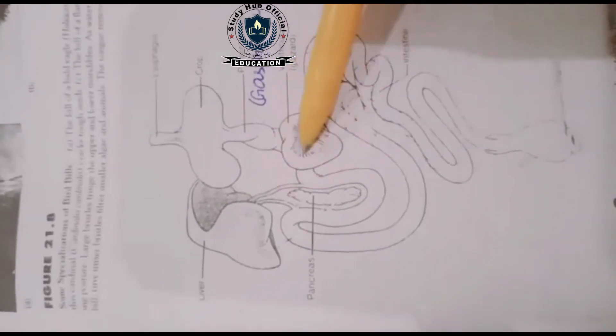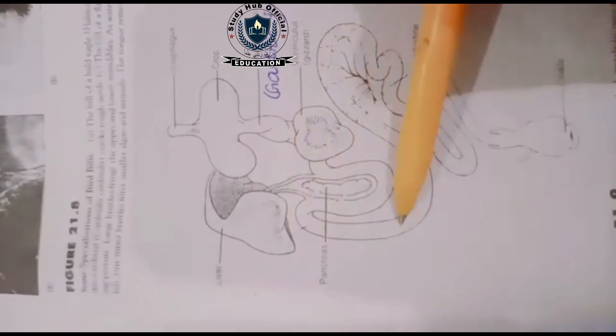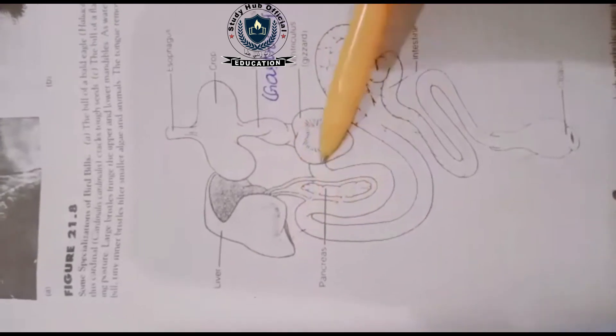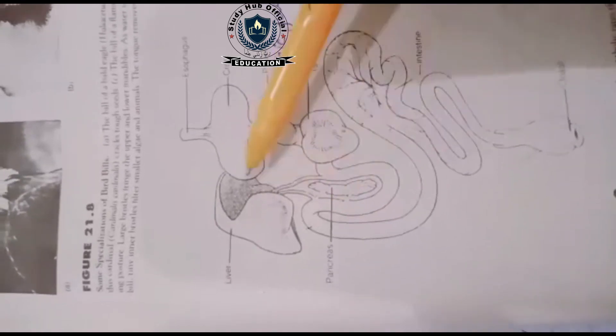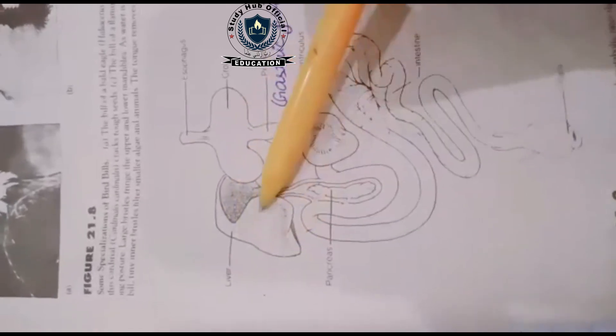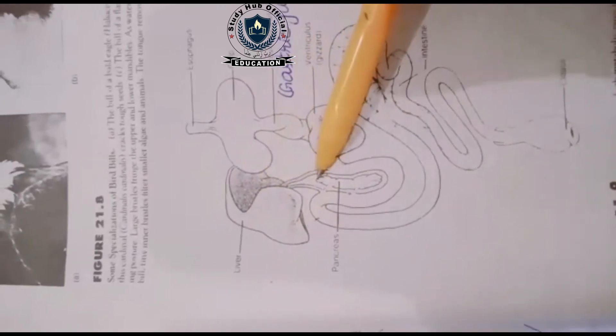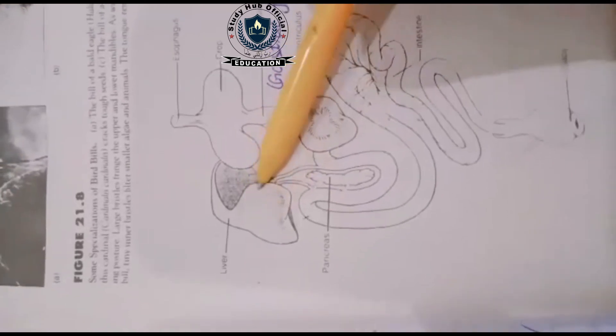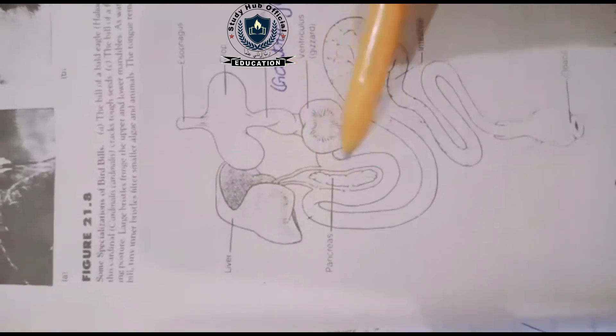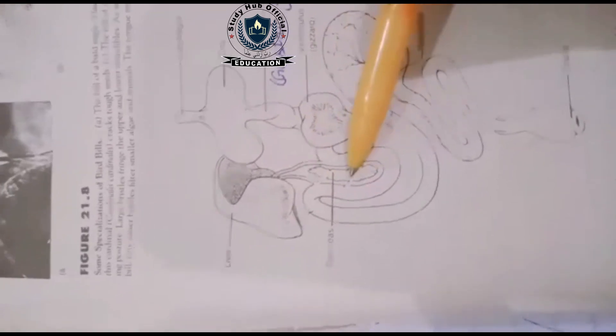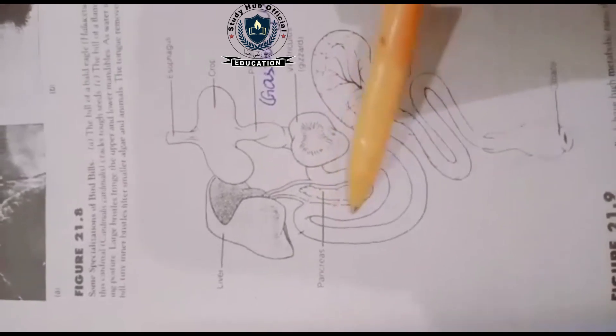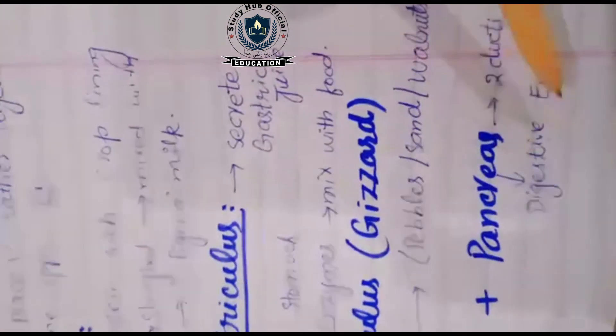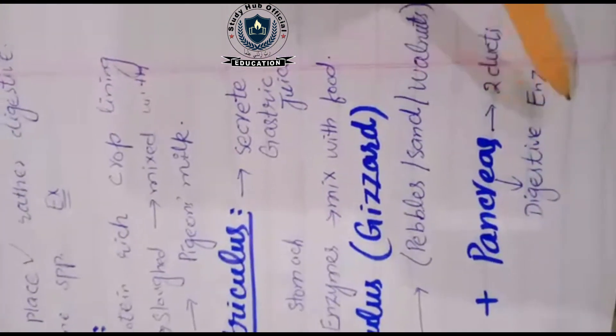This part is the small intestine. In the small intestine, two organs' secretions are entered. This organ, the liver, produces bile juice which enters the small intestine. This is the pancreas which produces pancreatic juice that also enters the small intestine. The pancreatic juice contains digestive enzymes which help in digestion as well.